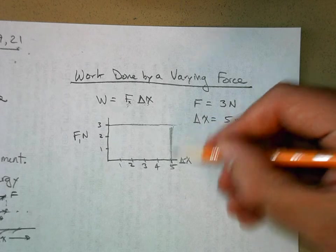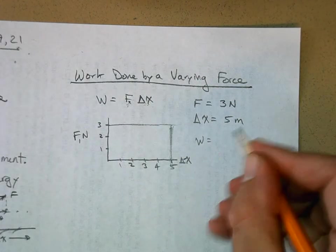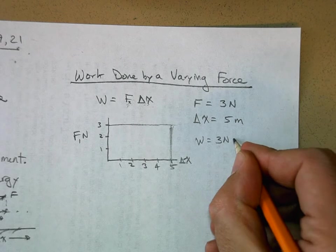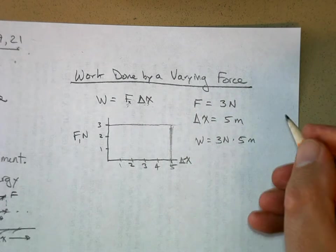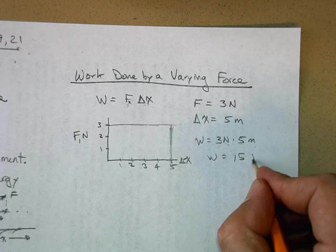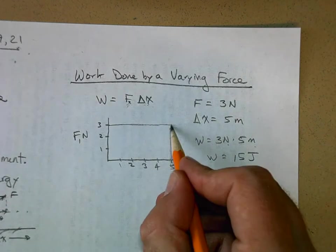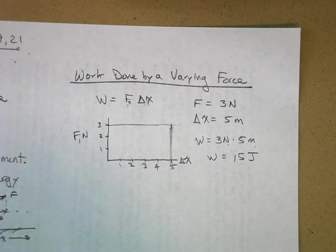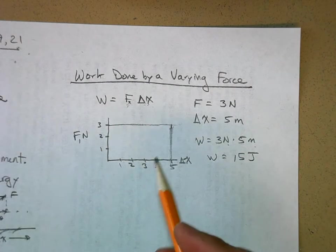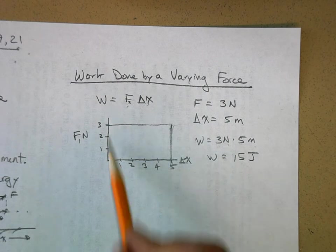We have a constant force that was applied through five meters. It's easy to see the work done here is three newtons times five meters. The work is, drumroll please, fifteen newton meters, which is fifteen joules. We know that's the answer.